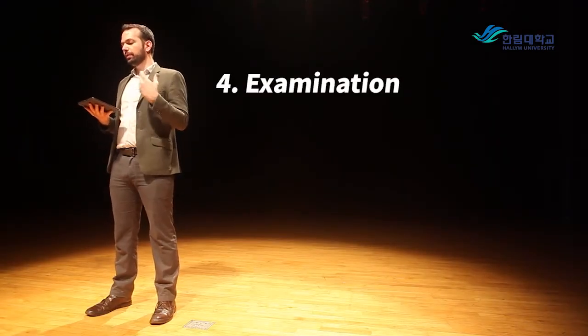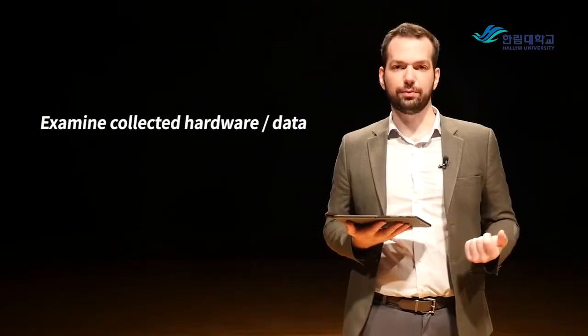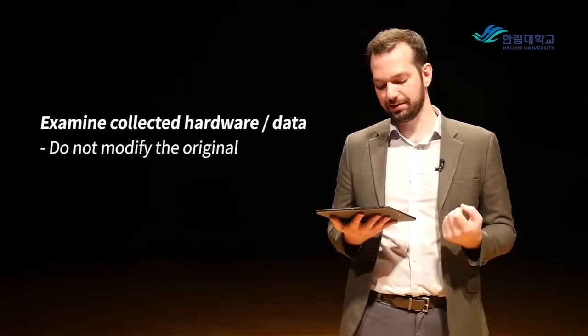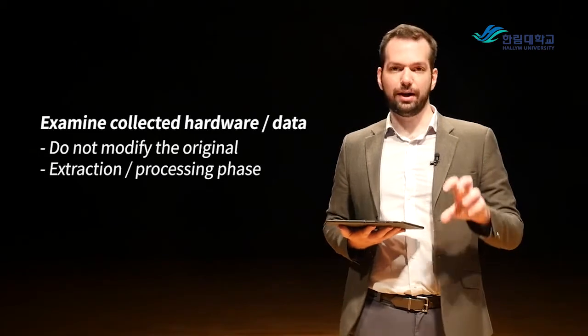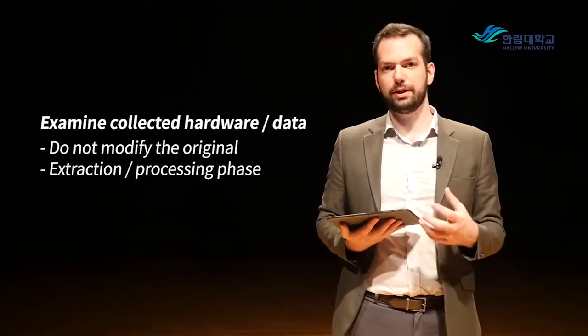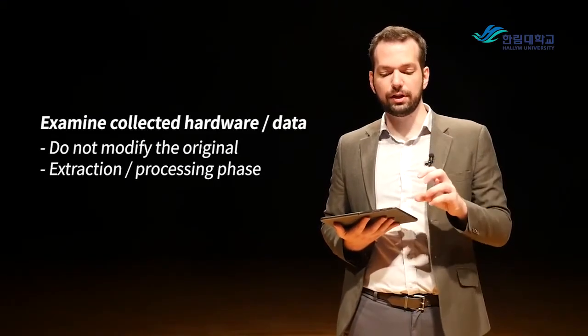Next is examination. Once we've collected the data and have copies of the original, we examine the collected hardware and data without modifying the original. We want to extract and interpret all of the data and get it into information form — converting data into human-readable information that we can actually learn something from. A lot of that translation process can be done automatically with forensic tools, but not all of it, so we also need to understand how to do some things manually.